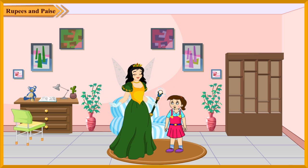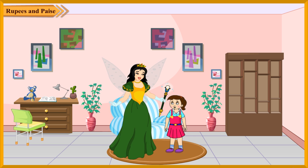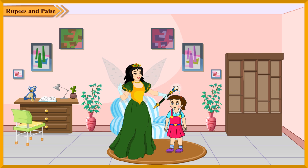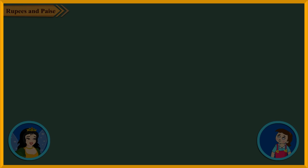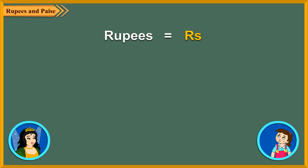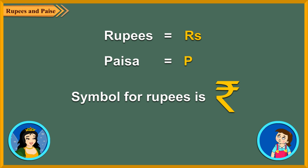We use money to buy things. Indian money is Rupees and Paise. It is in the form of notes and coins. In short, Rupees is written as RS and Paise as P. We also have a symbol to denote Rupee.